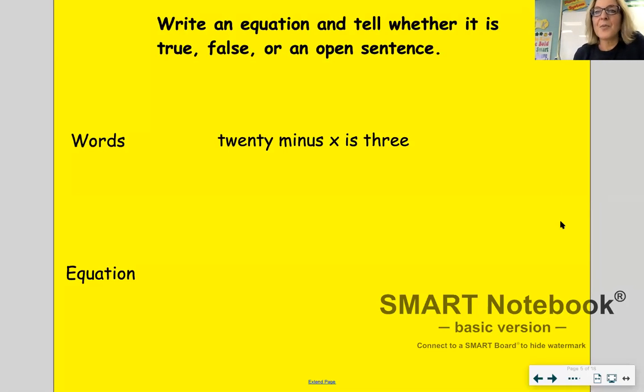So let's try this one. 20 minus x is 3. 20 minus x is 3. Just like it sounds. What kind of equation is this? We call this an open sentence because it does contain a variable, an unknown.